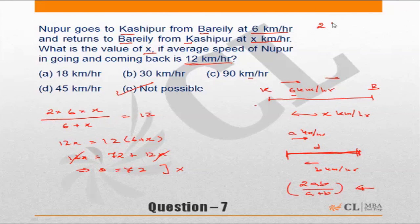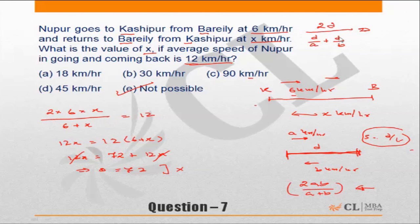Since speed equals distance upon time, time equals distance upon speed. For the onward journey the time taken is d upon a, and for the return journey it is d upon b. This translates into the formula — average speed equals total distance upon total time. You will notice that d gets cancelled out, which is how the formula 2ab upon a plus b is derived.